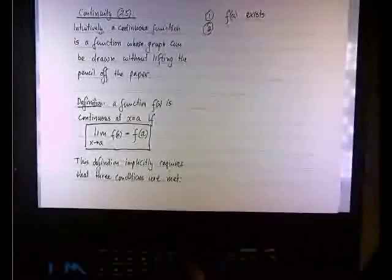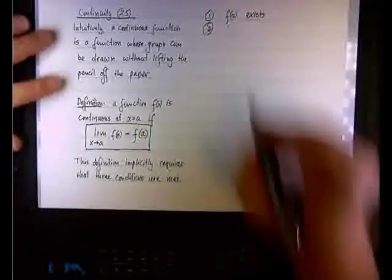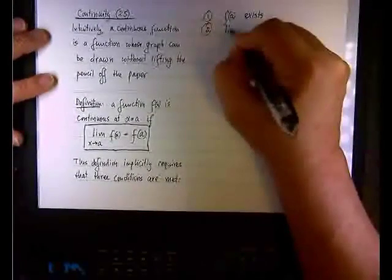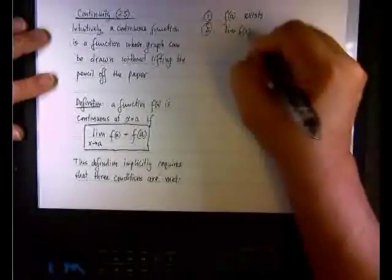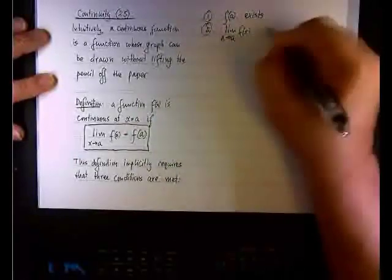The second condition is the left side. We have a limit on the left side, so we need the limit to exist. So the second condition, the limit of f(x) when x approaches a, exists.